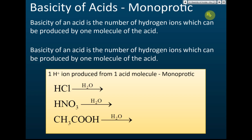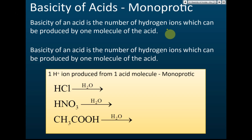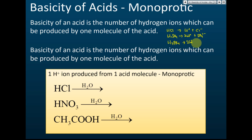The basicity of acids is another classification of acid. Basicity of an acid is the number of hydrogen ions which can be produced by one molecule of the acid. For example, hydrogen chloride when dissolved in water forms one hydrogen ion. Sulfuric acid when dissolved in water forms two hydrogen ions and one sulfate ion. Phosphoric acid when dissolved in water forms three hydrogen ions and one phosphate ion.